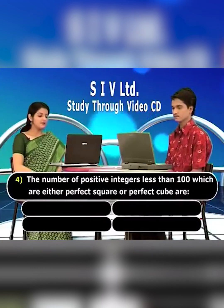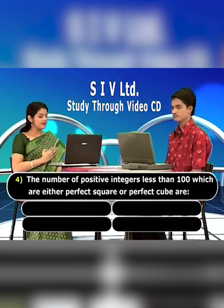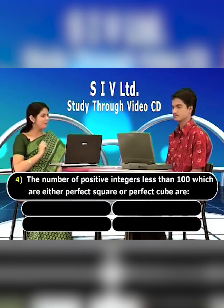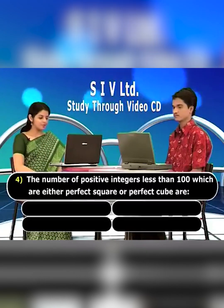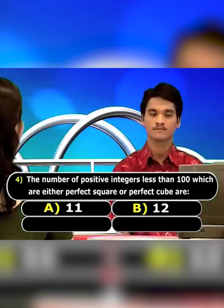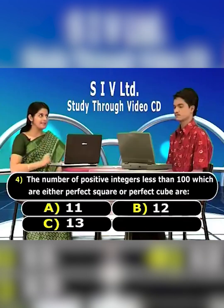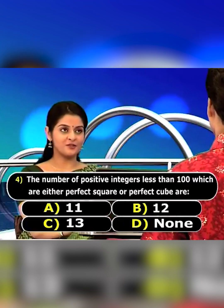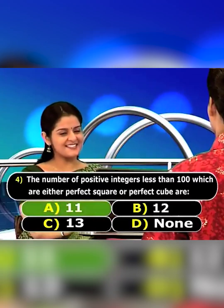The number of positive integers less than 100 which are either perfect squares or perfect cubes. The options are: a) 11, b) 12, c) 13, and d) none. The right answer is option a.